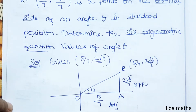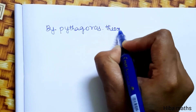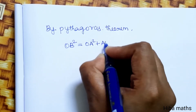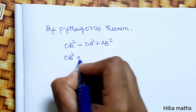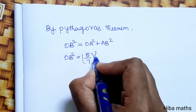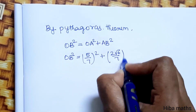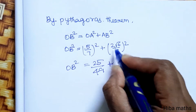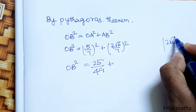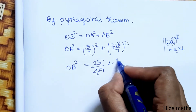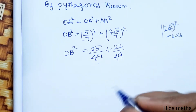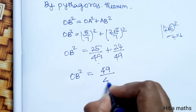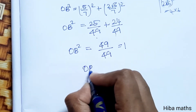Now the hypotenuse OB is found by the Pythagorean theorem. OB² = OA² + AB² = (5/7)² + (2√6/7)² = 25/49 + 24/49 = 49/49 = 1. So the hypotenuse OB = 1.